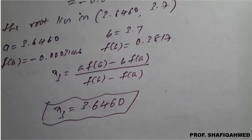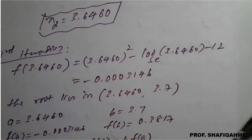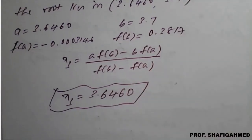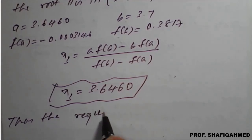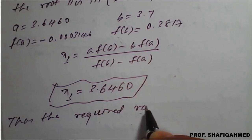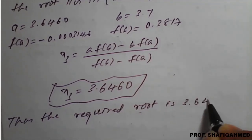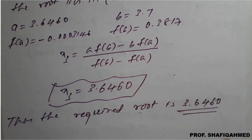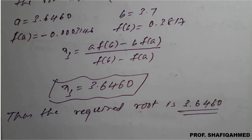x3 = 3.6460, which is the same as x2. Since both results are the same, we stop. Therefore, the required root of x² - log x to the base e = 12, found by the Regula Falsi method, is 3.6460.